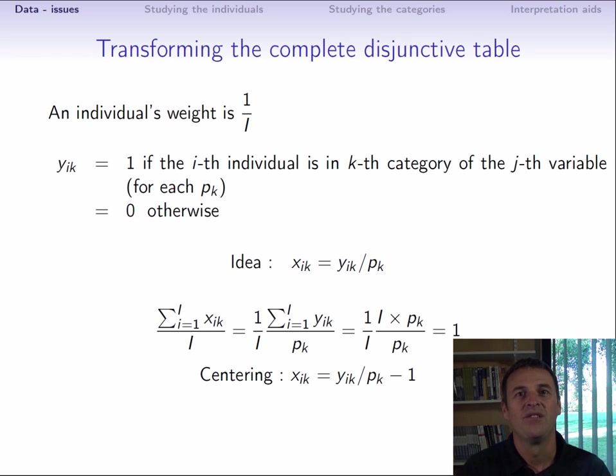By coding the complete disjunctive table in this way, the mean of the xi k is equal to 1. In multiple correspondence analysis, we center the data, which in the end means that the entry xi k will actually be yi k over pk minus 1. The table with the xi k is the one on which we do the projection. To make the connection with principal component analysis, xi k is simply the centered and standardized data.